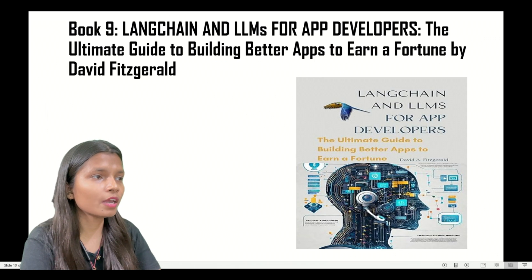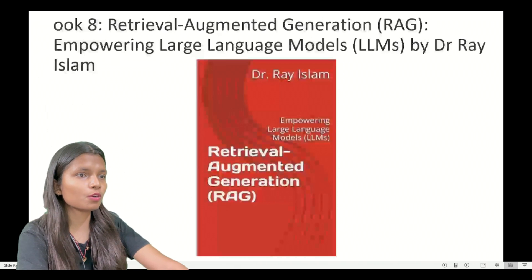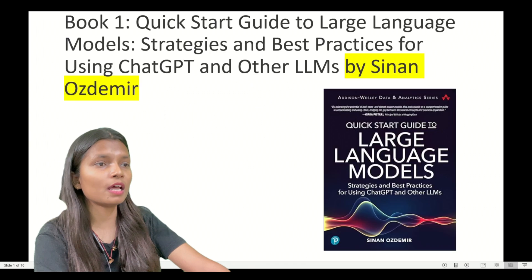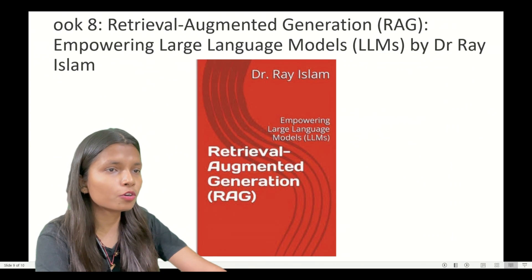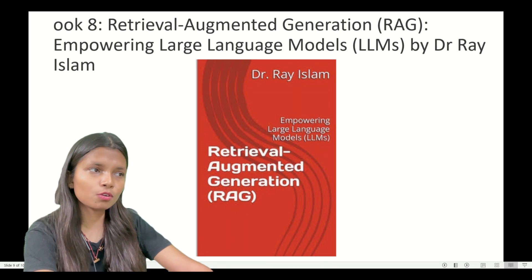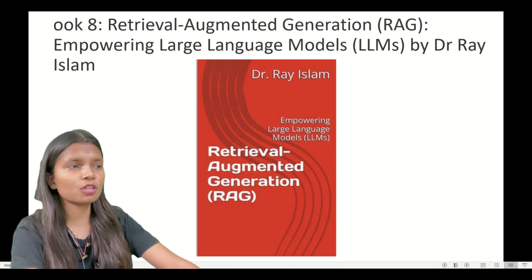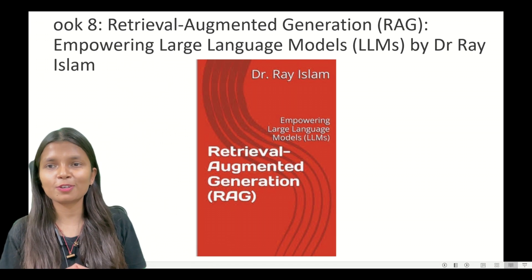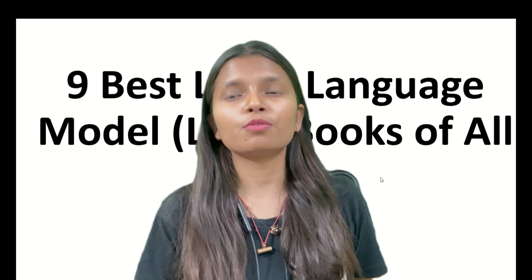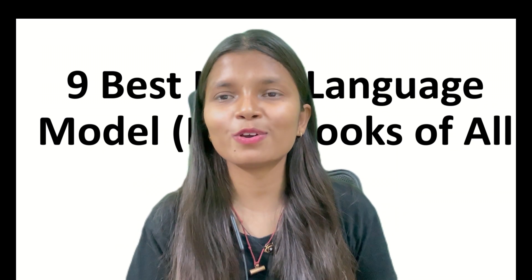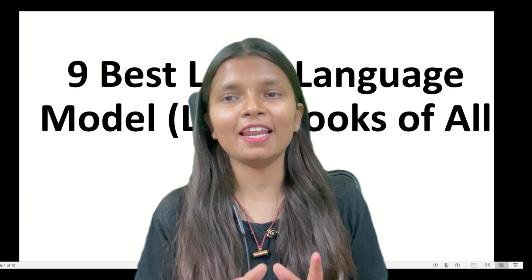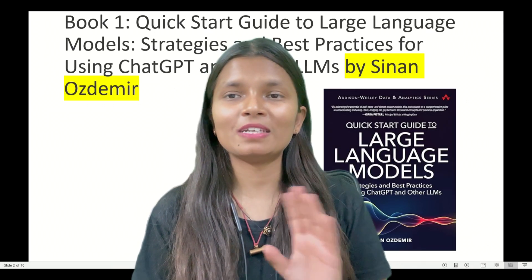So these are all nine books. You can read any of them as per your choice — if you are more into Python, if you want to create apps with LLM, or if you are focused on generative AI or are a business leader, you can pick accordingly. You can take a screenshot and search them on Amazon, or download the ebooks on Kindle. If you like this video, don't forget to hit the like button and share it with those who want to learn LLM. Till the next video, stay tuned — bye!